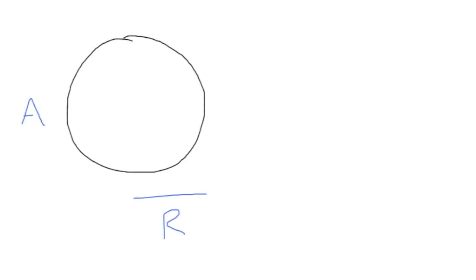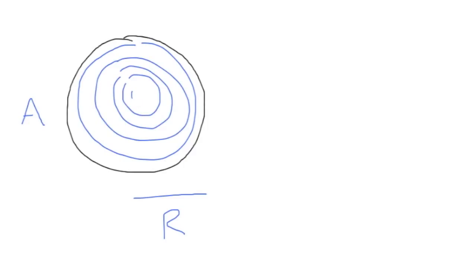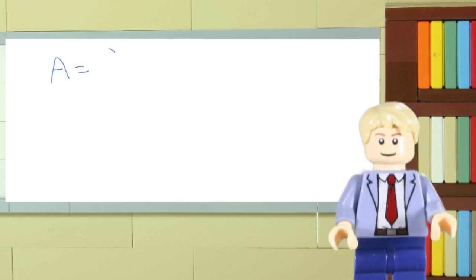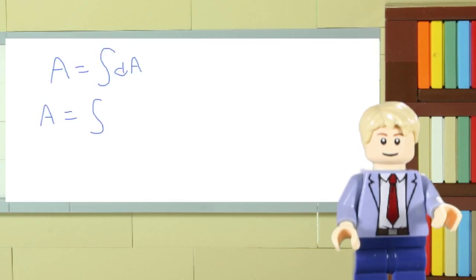Imagine that the circle is the cross-section of a tree. If we look carefully, we would be able to see the growth rings. Each ring has a small area, dA. That area could be expressed as the circumference of the ring times the width of the ring. Let's draw an example ring at an arbitrary radius, little r. The circumference of this ring is 2 pi little r. The width of the ring is dr, a small piece over the overall radius, capital R.